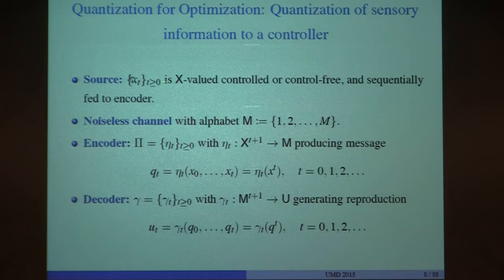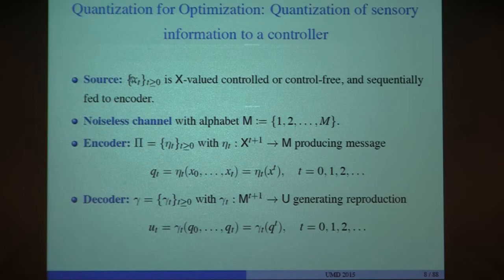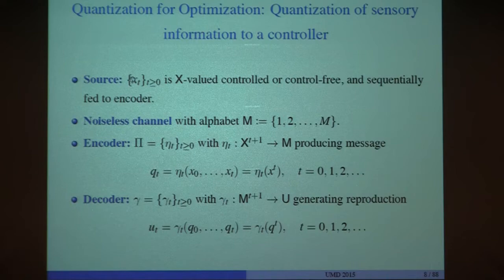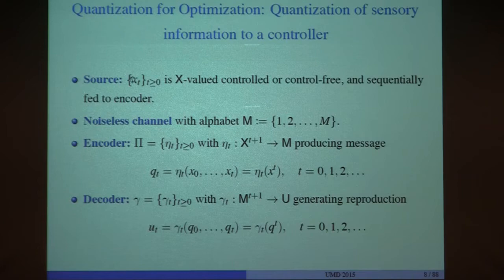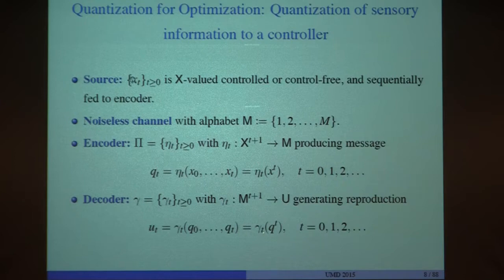Suppose our state process is x-valued, where x can be a real-valued process—though everything can be generalized for any complete separable metric space. We'll first talk about the noiseless channel case. Suppose we have a noiseless channel and an encoder. An encoder at any given time must be causal: it can only use past received data, and maps what it knows to the set of channel inputs, which is a finite set. The decoder receives the finite channel output and comes up with a control action.